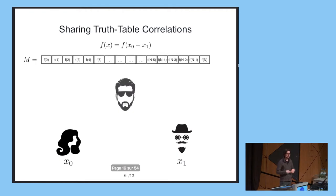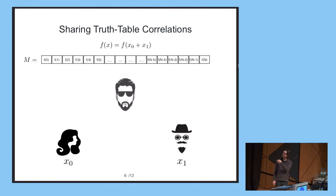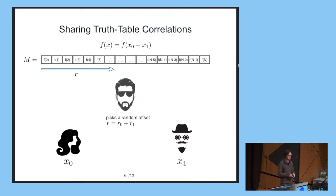To simplify, I will focus on the case of two parties and semi-honest security; the extension to the more general case is not that hard. Our starting point is a well-known protocol for sharing truth table correlations. These protocols allow securely evaluating any function in the correlated randomness model with information-theoretic security when the function is represented by its truth table. We take some function f, represent it by its truth table M — the function evaluated at all possible points — and our trusted dealer will first pick a random shift r and shift the truth table by this offset.